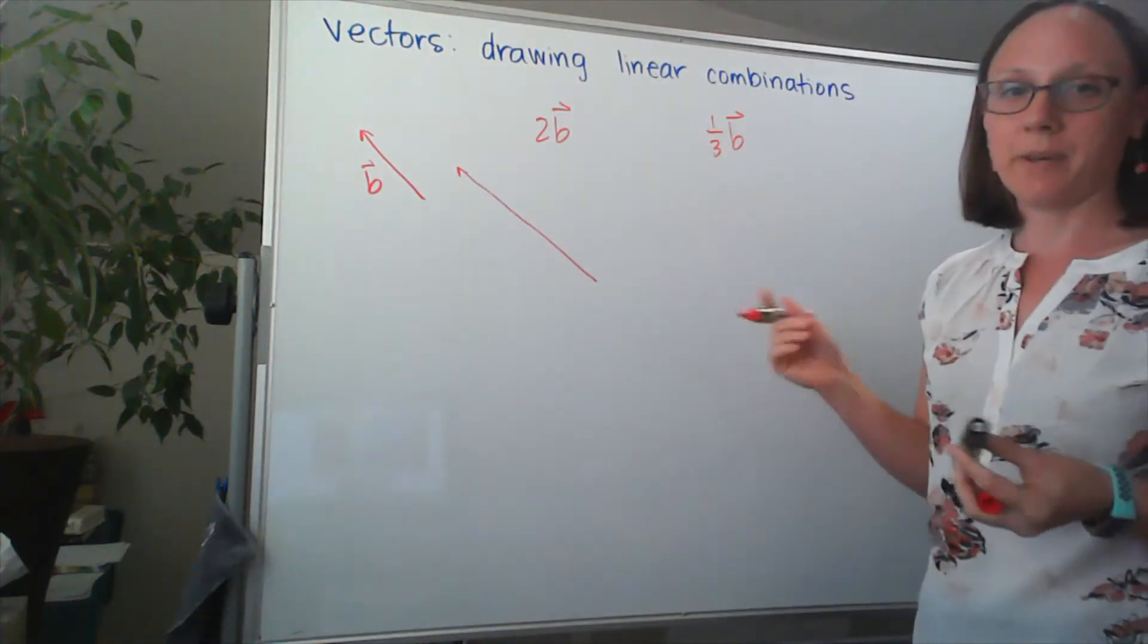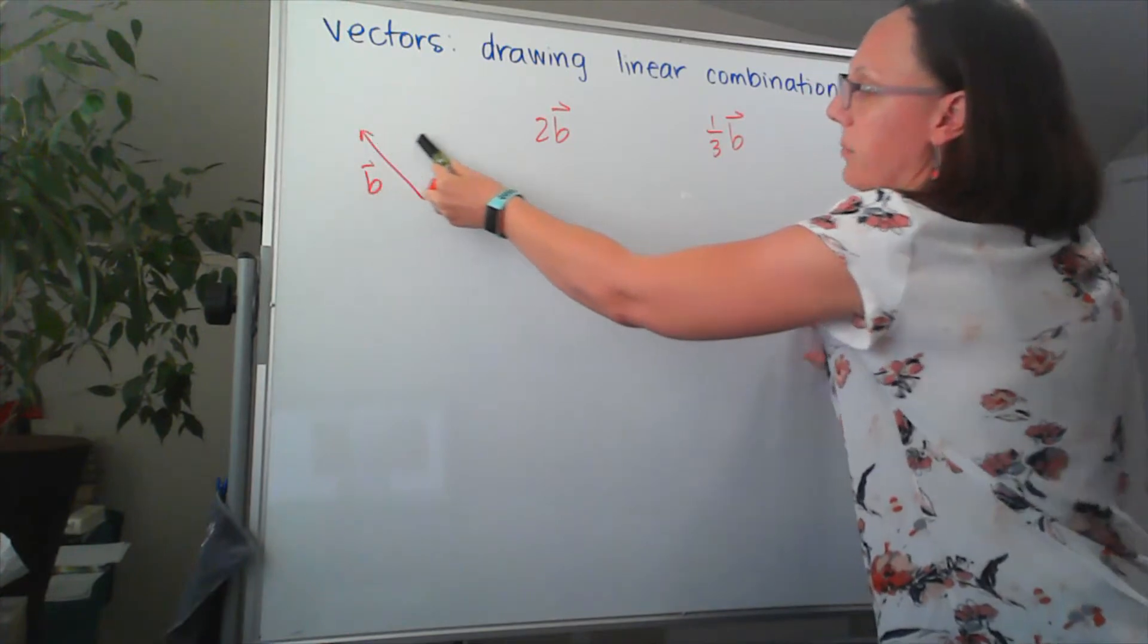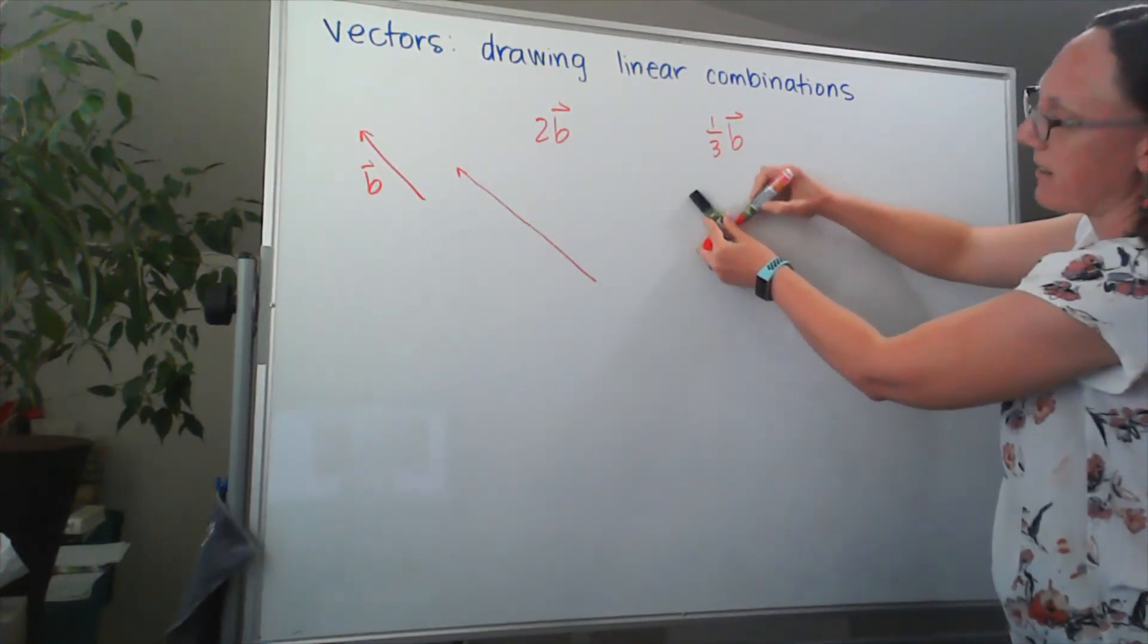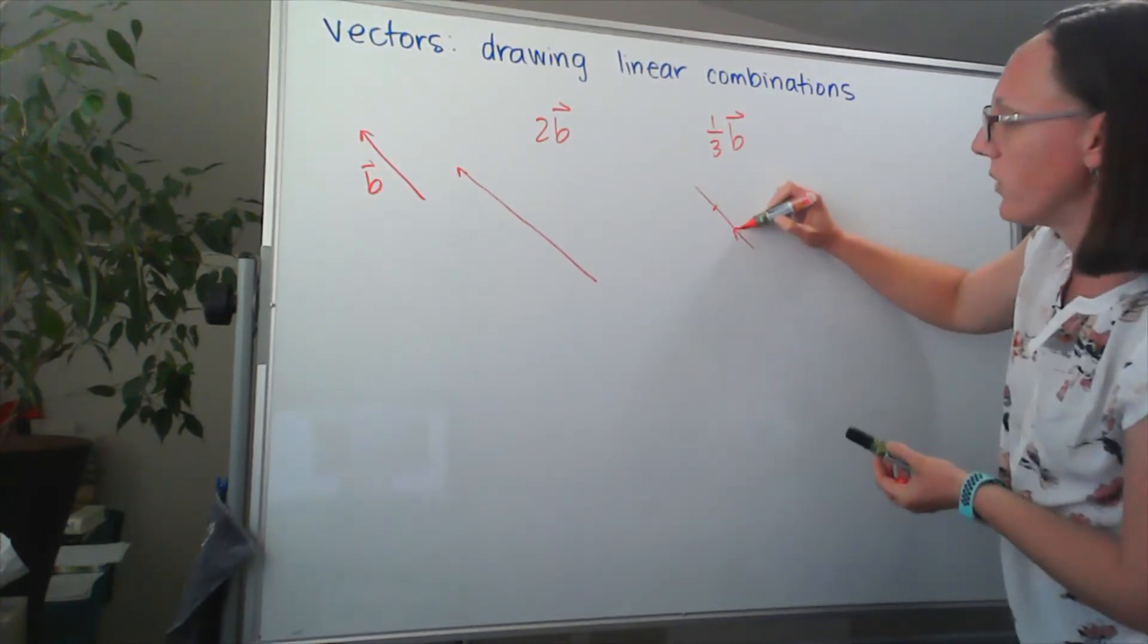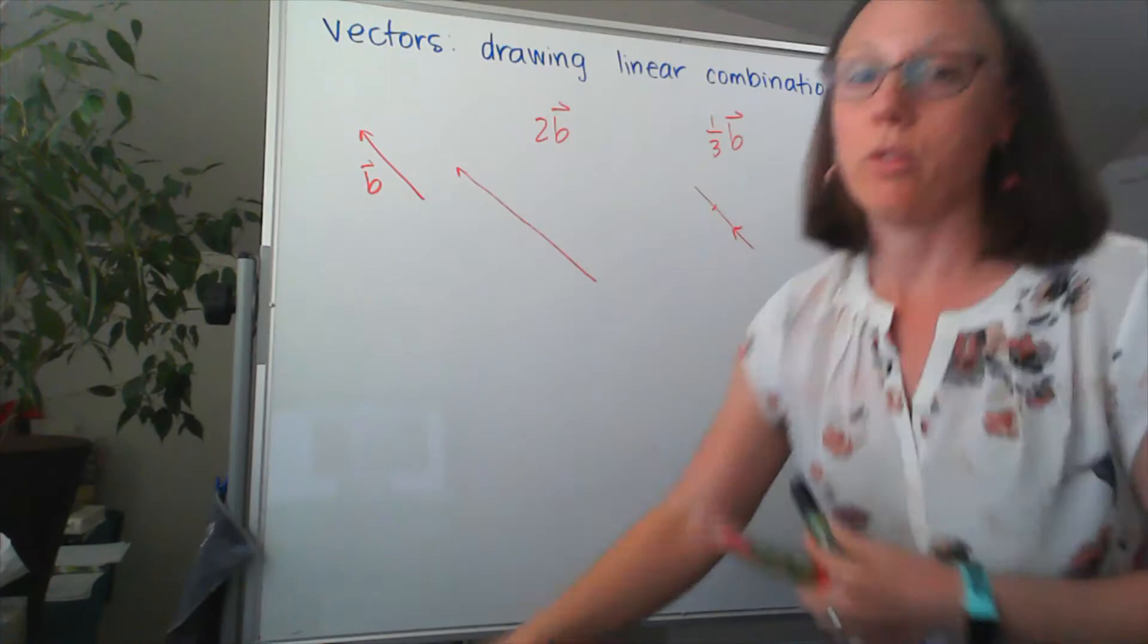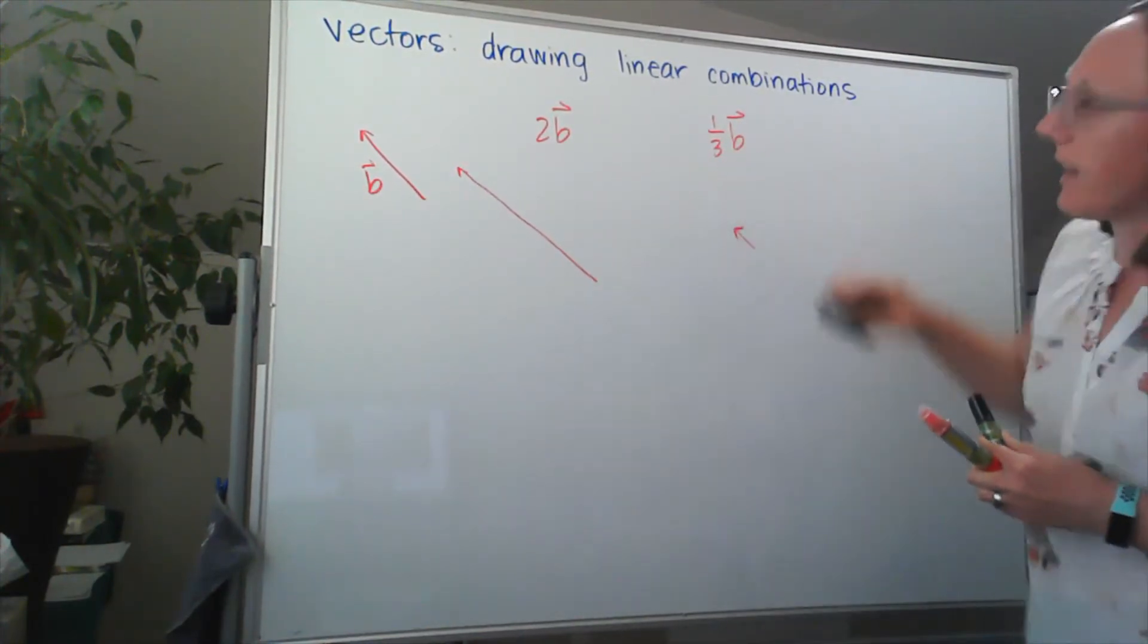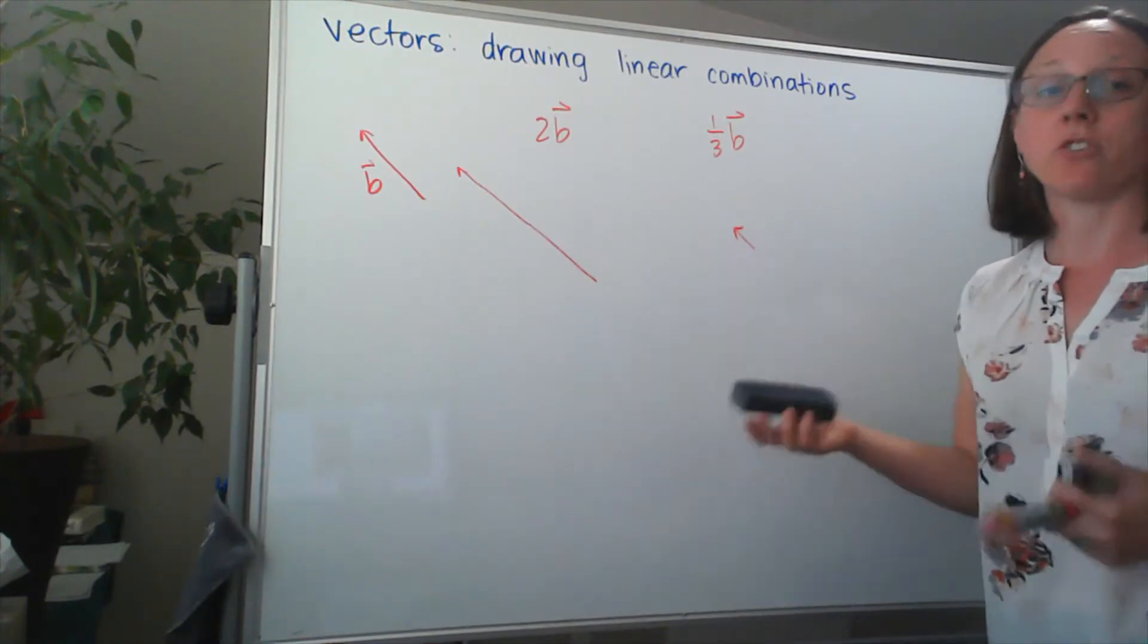Similarly, one third of B is going to keep that same direction. So here, trying to keep it at the same angle, and instead of going this entire distance, we're going to imagine that it's only going one third of the distance. And that's what one third of B would look like. Each of these are scalar multiples.